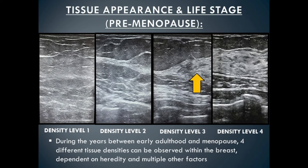In density level three, the glandular tissue becomes more prominent and you see fewer areas of fatty tissue. In density level four, breasts are extremely dense — the breast is made up of primarily glandular tissue with little fat. In this category there is greater than 75 percent glandular tissue.